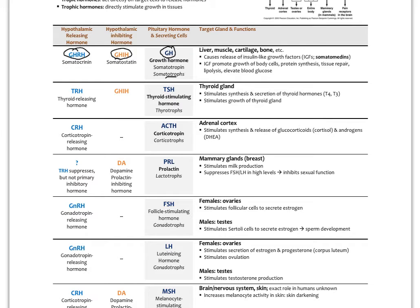GHRH stimulates somatotrophs to release growth hormone, while GHIH inhibits them. The major effect of growth hormone is to cause growth in tissues, but it works in a convoluted fashion. Growth hormone enters the blood and causes liver cells to release somatomedins, the biggest being IGF-1 — a peptide released by the liver in response to growth hormone. IGF-1 then tells muscle cells, cartilage, and bone to grow, making the somatomedins the primary growth supporters.